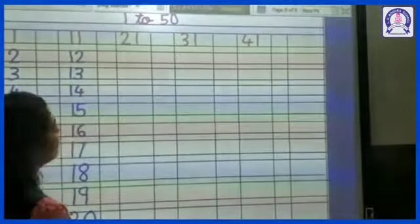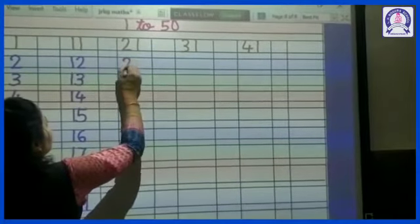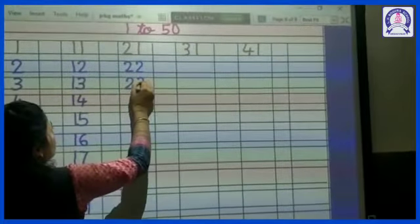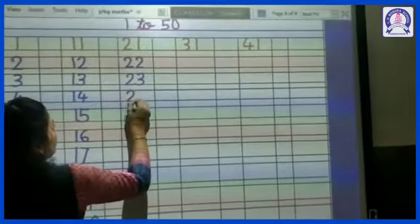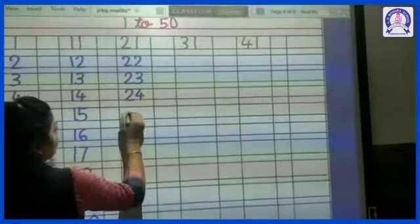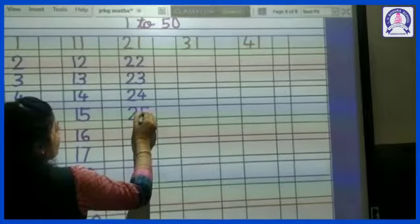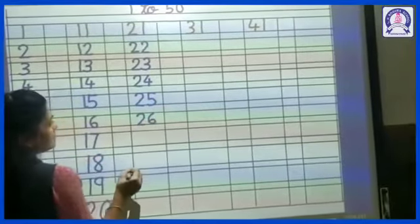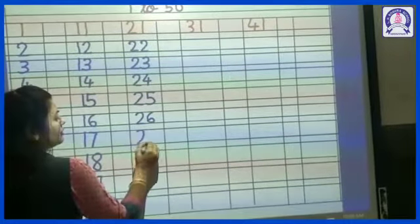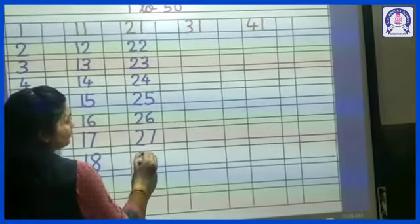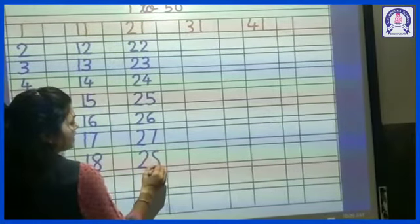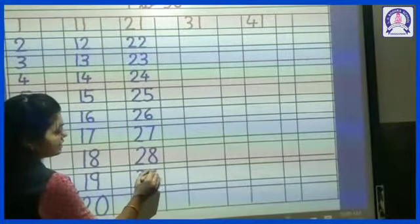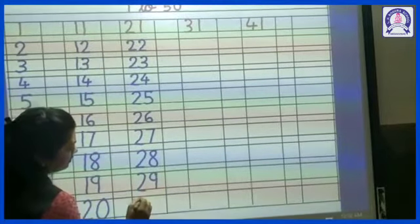21 is already written. 22, 23, 24, 26. You can write. 27, 28, 29, 30.